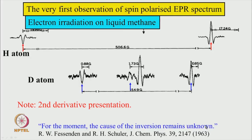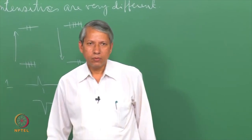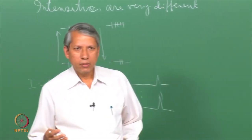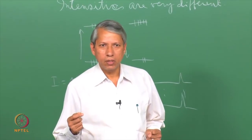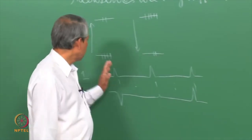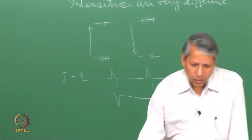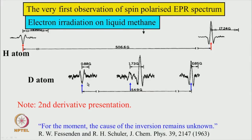People probably did not pay much attention, but soon similar observations were seen in NMR experiments. When NMR signals of a reacting system were recorded, one could see unusual signals — some appearing emissive. One does not necessarily have to go to time-resolved EPR experiments; even in steady state one can see similar behavior.